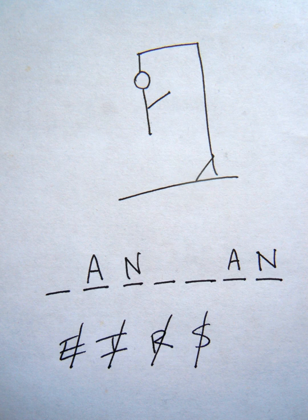Hangman is a paper and pencil guessing game for two or more players. One player thinks of a word, phrase or sentence and the other tries to guess it by suggesting letters or numbers, within a certain number of guesses.